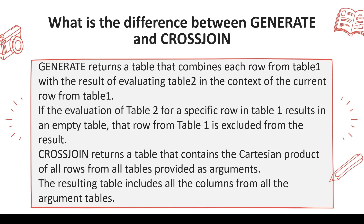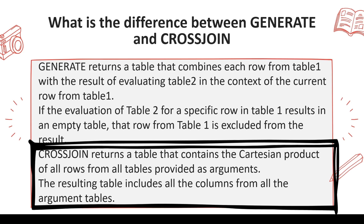For example, if we have a start date and end date and we want to generate each date between them, GENERATE can take that row context of start date and end date and generate a calendar for that. CROSS JOIN also does a Cartesian product — it returns a table containing the Cartesian product of all rows from all tables provided as arguments, including all columns from those tables.